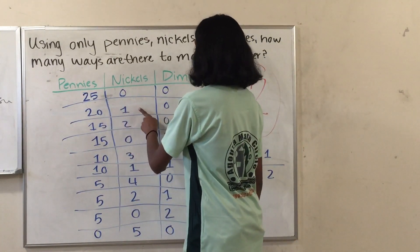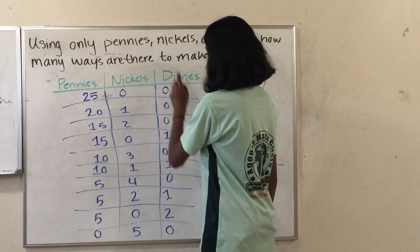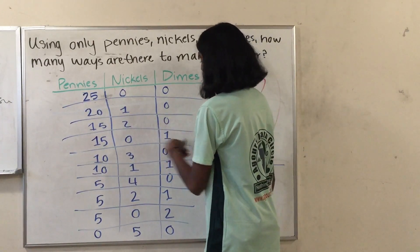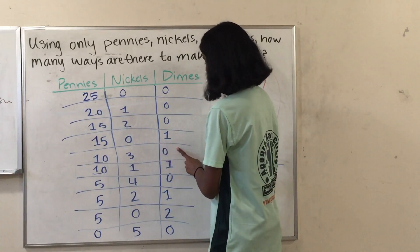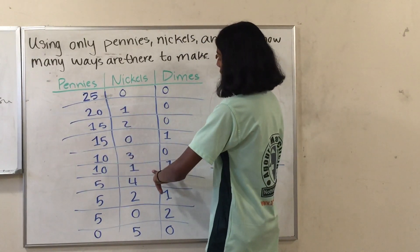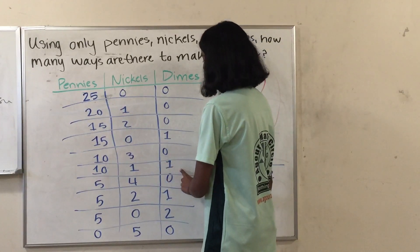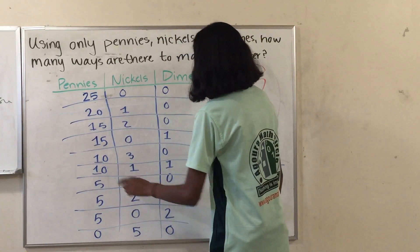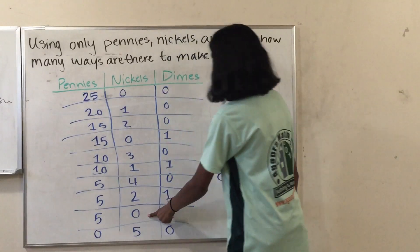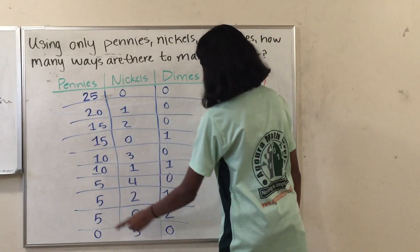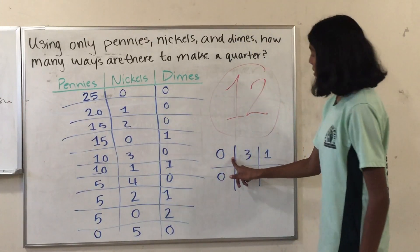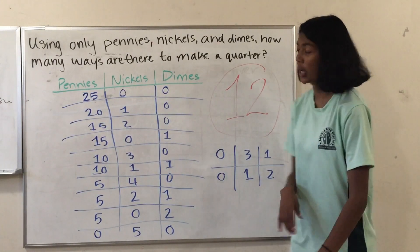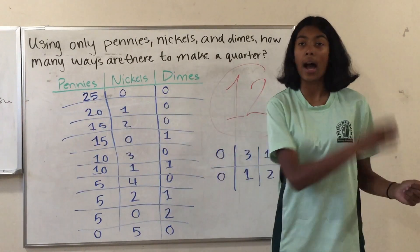So we have 20 pennies and 1 nickel; 15 pennies and 2 nickels and 0 dimes; 15 pennies, 0 nickels, and 1 dime — since 2 nickels equals 1 dime; 10 pennies, 3 nickels, 0 dimes; 10 pennies, 1 nickel, 1 dime; 5 pennies, 4 nickels, 0 dimes; 5 pennies, 2 nickels, 1 dime; 5 pennies, 0 nickels, 2 dimes; 0 pennies, 5 nickels, 0 dimes; 0 pennies, 3 nickels, 1 dime; 0 pennies, 1 nickel, and 2 dimes. Counting up all these ways, we have our answer, which is 12.